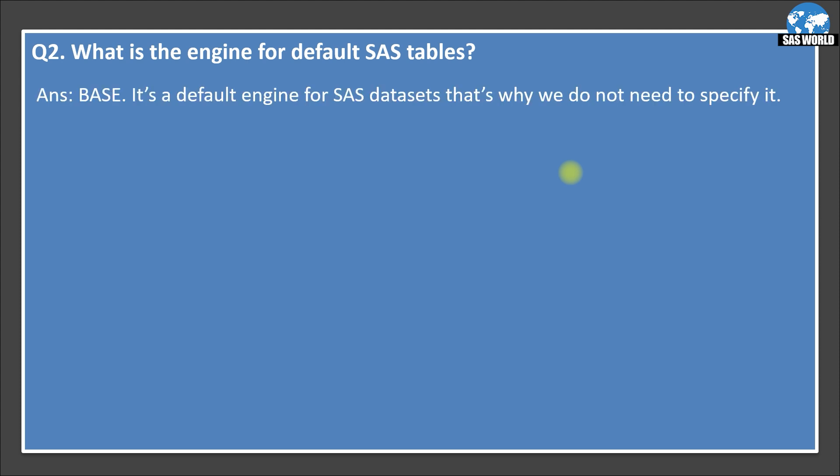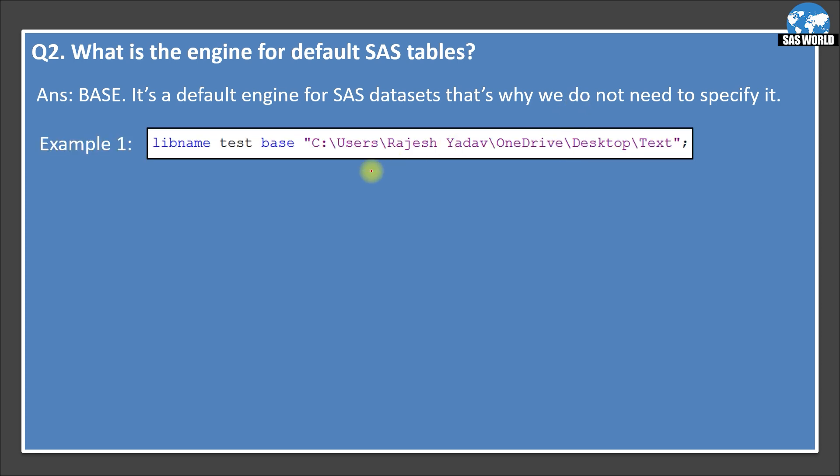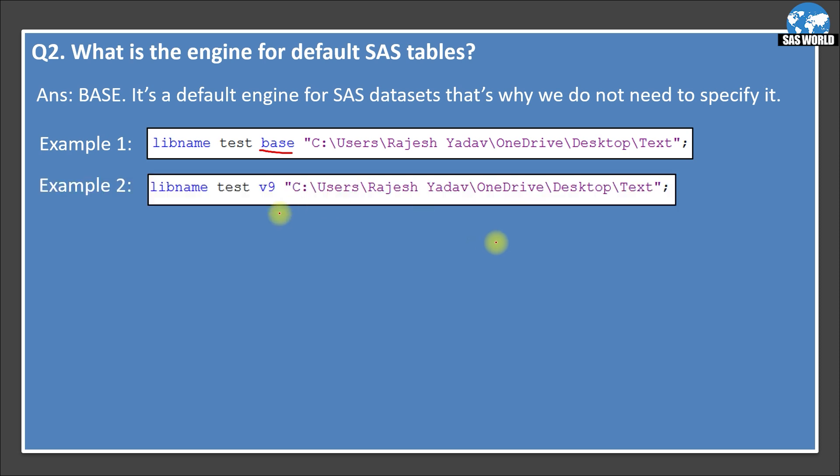So this engine is base. It's a default engine for SAS tables. That's why we do not need to specify it. Let's see an example. So when you create a library, you do not specify this BASE. Why? Because this is a default SAS engine to identify the SAS tables. So you can omit this. So lib name test library reference and this location it is pointing to. And base is the type. Let's see the another example. I use V9 this time. So what is this V9? V9 is nothing but just the alias of this base. So you can either write base or you can write V9. I hope this is clear.